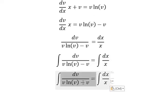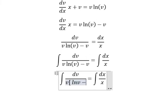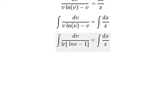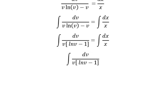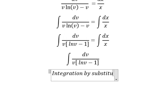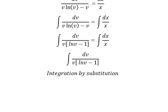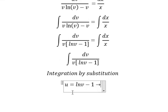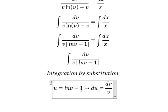So v and v we can do factorization. Now we need to concentrate on this one — we need to use integration by substitution. So I will put u equals to ln v minus one, then we differentiate both sides. We have dv over v. This one is a constant so you get zero, and this one we have one over v.